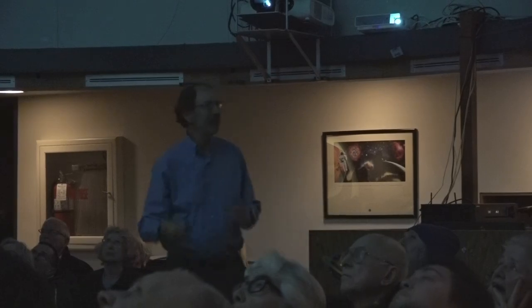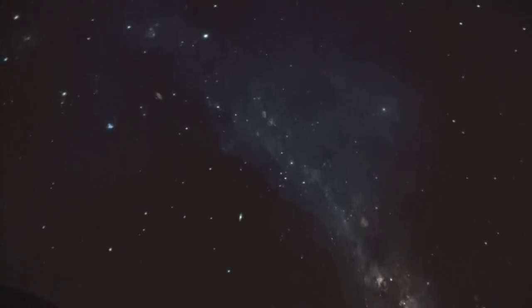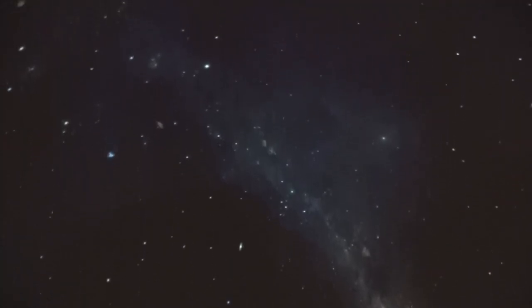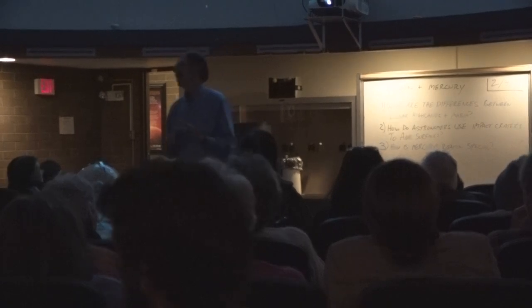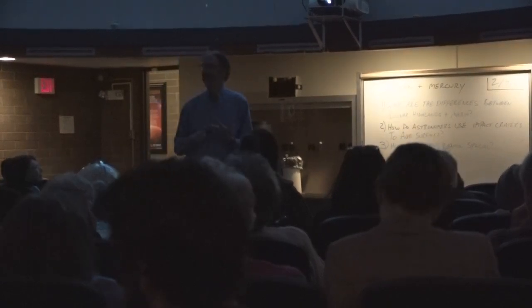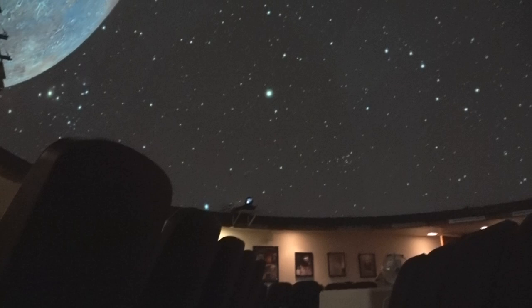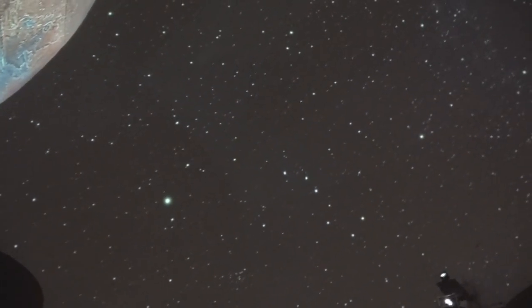I mean, no light can escape the black hole. Right, but what you can see is there's an accretion disk of all kinds of matter that's spinning in towards it. And it's really hot and it gives off a lot of light. So you can actually see this dark spot.